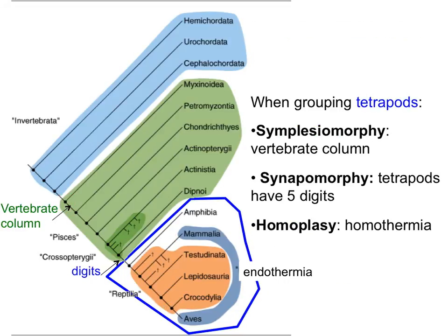To recap: when talking about tetrapods, having a vertebral column is a symplesiomorphy — it's something they all share but it's not unique to them, as fish also have a vertebral column. Having five digits is unique to tetrapods, so it is a synapomorphy. And when comparing mammals and birds, the ability to control their temperature — endothermia — is a homoplasy.